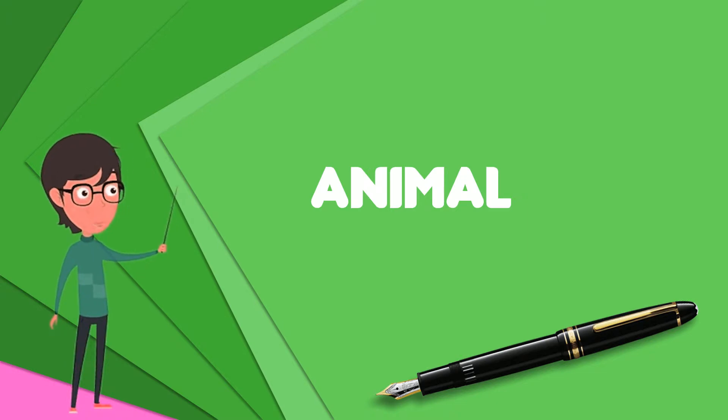Most living animal species are in the Bilateria, a clade whose members have a bilaterally symmetric body plan. The Bilateria include the protostomes, in which many groups of invertebrates are found, such as nematodes, arthropods, and mollusks.